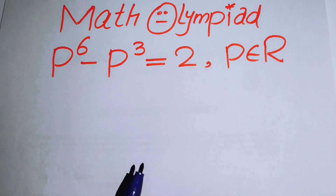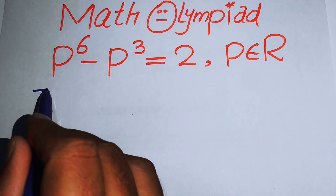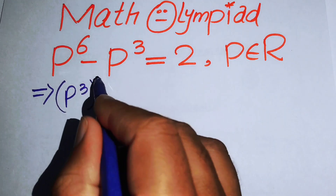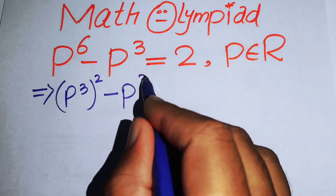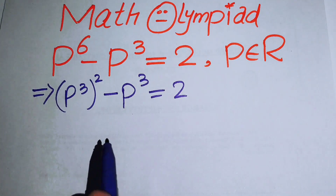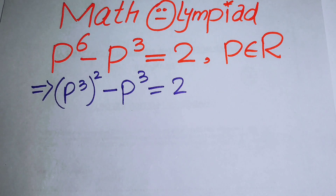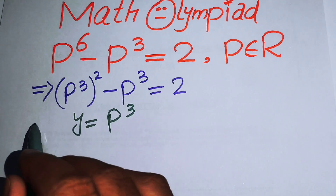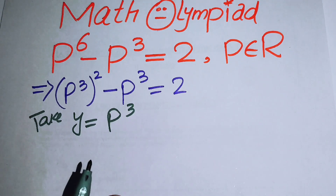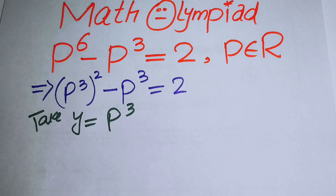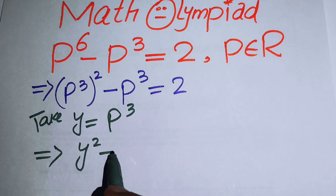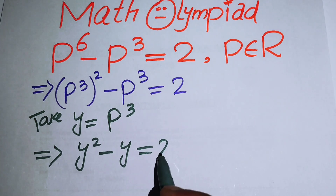The very first thing we are going to do is rewrite this equation. We write p to the power of 6 as (p cubed) whole squared, so the equation becomes (p cubed)² minus p cubed equals 2. Then we simplify by letting y equal p to the power of 3, so the expression becomes y squared minus y equals 2.